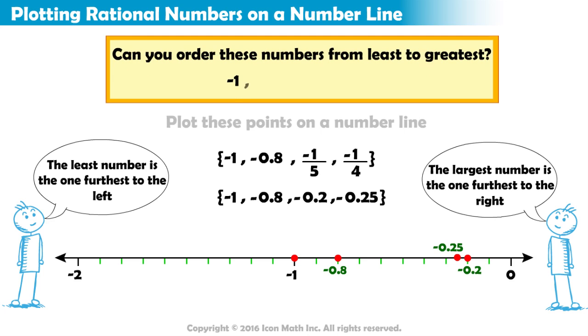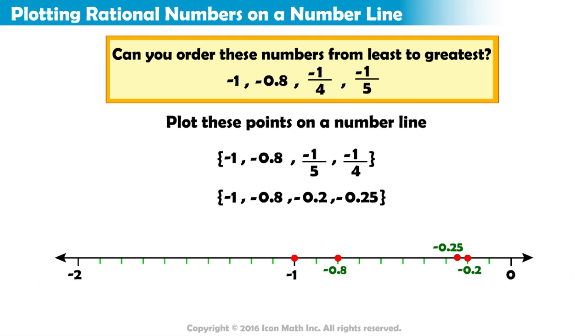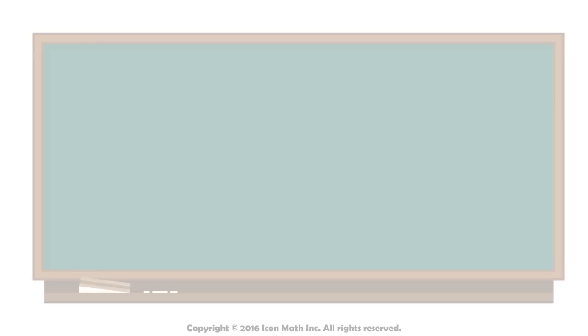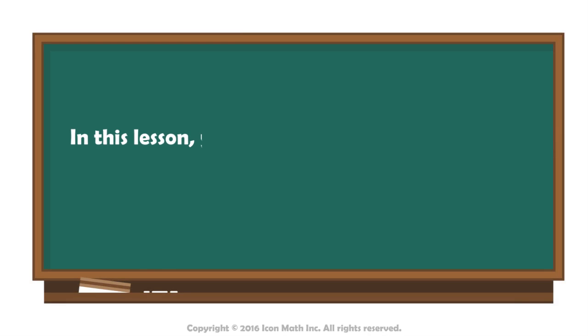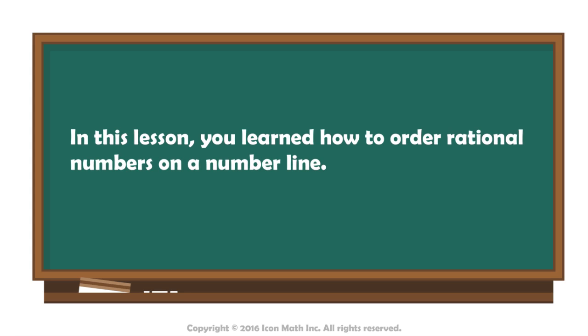we have negative 1, negative 8 tenths, negative 25 hundredths or negative 1 fourth, and negative 2 tenths or negative 1 fifth. Great work! In this lesson, you learned how to order rational numbers on a number line.